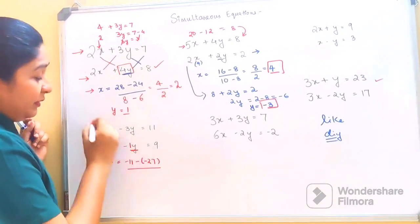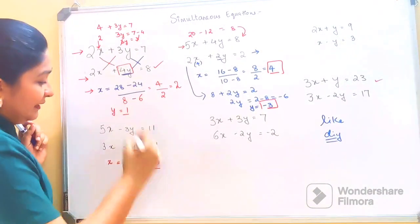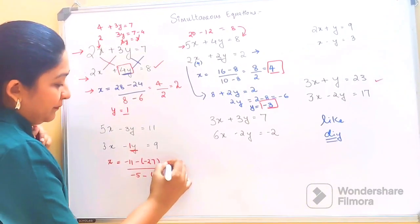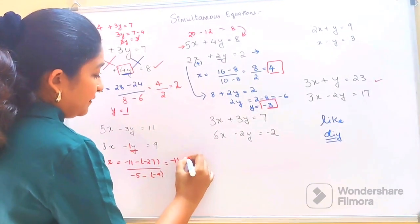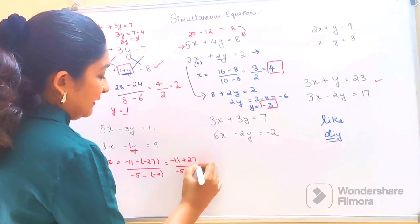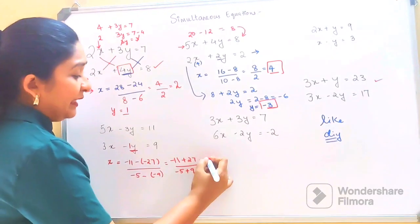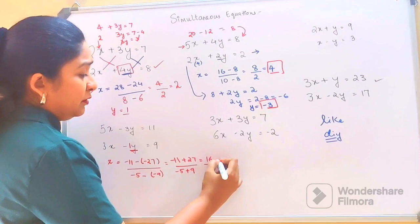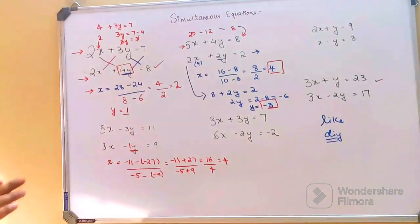Then: minus 1 into 5 gives minus 5, minus sign, and 3 into minus 3 gives minus 9. This comes out to be minus 11 plus 27, over minus 5 plus 9. So 16 over 4, and the value of x comes out to be 4.